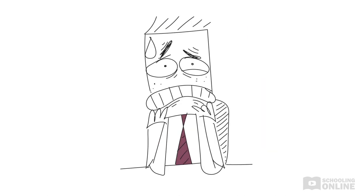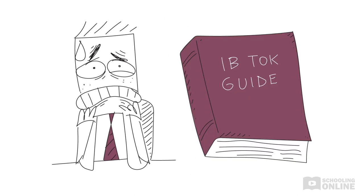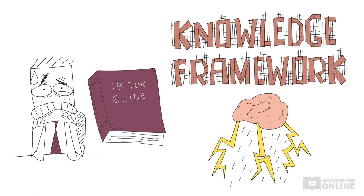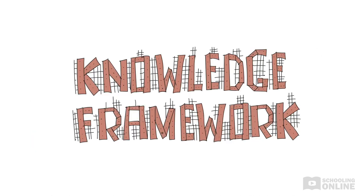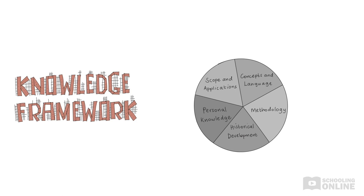To help us get our heads around each one, the IB TOK guide gives us a suggested knowledge framework that helps us to brainstorm the important issues related to each area of knowledge. This is what the knowledge framework looks like. As you can see, there are five ways to approach each area of knowledge.